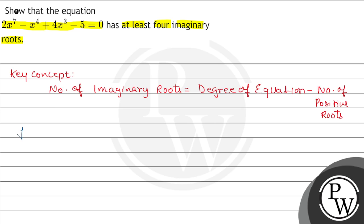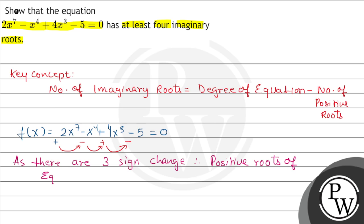Now, let's see here. f(x) = 2x^7 - x^4 + 4x^3 - 5 = 0. Here we have positive, how many sign changes are here? Here was plus, this is minus, this is plus and this is minus. 1, 2, and 3. As there are 3 sign changes, therefore positive roots of equation are 3. Maximum, how many positive roots can be? It can be 3.